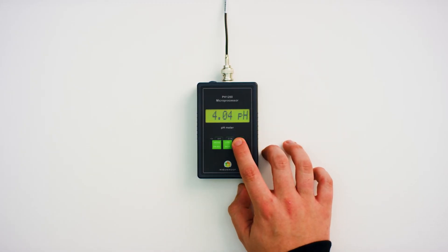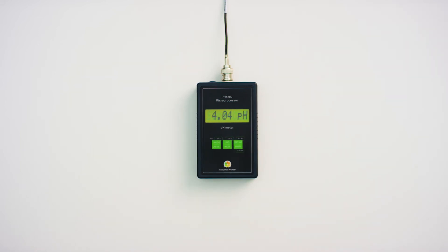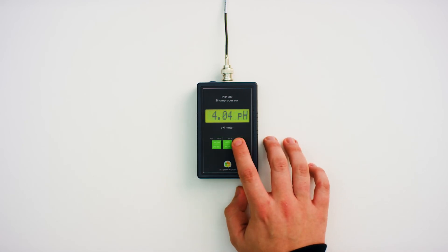Press and hold the log key until 0 cal appears. This is followed by a pH value. When it is stable briefly press the setup button.